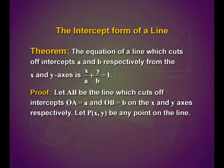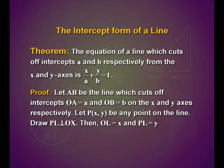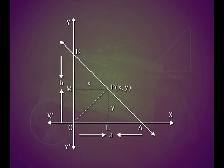Look into the proof. Let AB be the line which cuts off intercepts OA equal to a and OB equal to b on the x and y axis respectively. Let P(x, y) be any point on the line. Draw PL perpendicular to OX, then OL is equal to x and PL is equal to y. We have x axis and y axis and line AB which has point P(x, y) on it, with x intercept a and y intercept b, and the distance PL equal to y and MP distance equal to x.